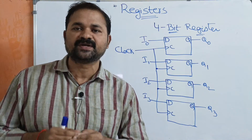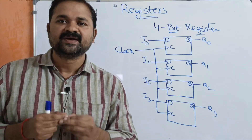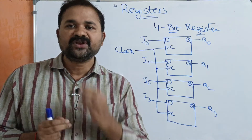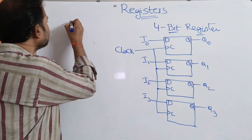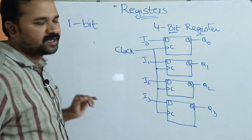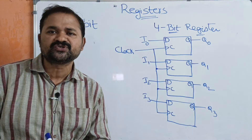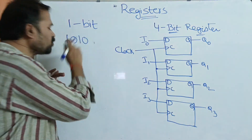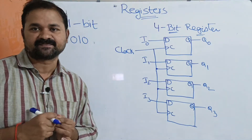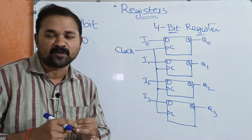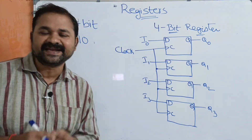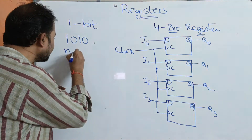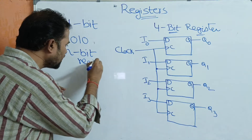A register is a group of flip-flops which can be used for storing data. A flip-flop can store only one bit of data — either zero or one. But if you want to store more than one bit, then we have to go for registers. If we take an n-bit register, it is a group of n flip-flops where each flip-flop can store one bit of data.